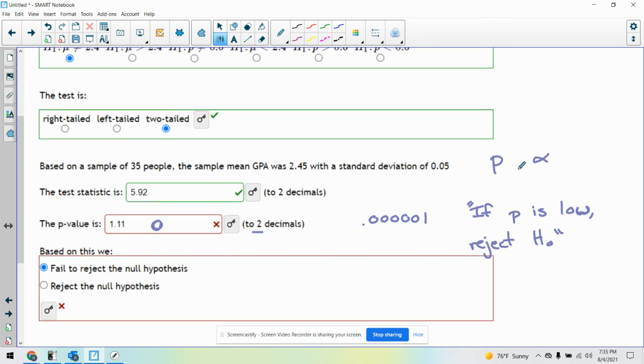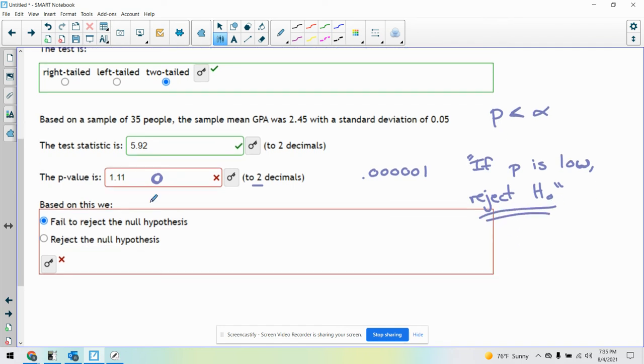p is 0. So p is going to be less than alpha. So p is low. So we're going to reject H0, the null. So if we reject the null, that's going to be our answer there.